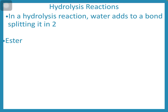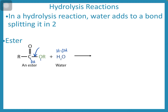To break an ester up, if we add water, we're going to break the bond over here, and water is going to break into hydrogen and hydroxide. A hydroxide group would add over here, and a hydrogen would add to that oxygen, creating the carboxylic acid and an alcohol.